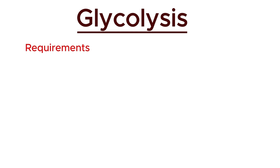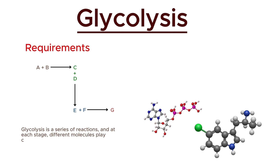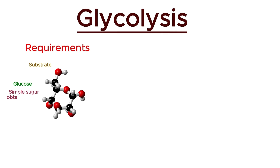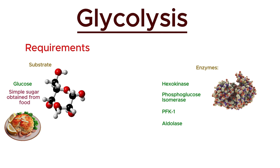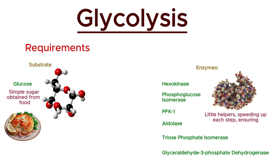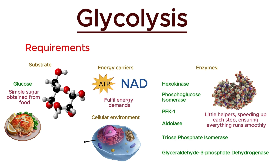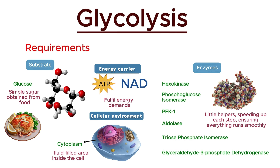Before we dive into the steps of glycolysis, let's talk about what we need to get started. Glycolysis is a series of reactions, and at each stage, different molecules play crucial roles. First, we need a substrate — in this case, it's glucose, the simple sugar we get from our food. Next, we require various enzymes, which act like little helpers that speed up each step of the process, ensuring everything runs smoothly. We also need energy carriers — molecules like ATP and NAD — which are essential for providing the energy needed to drive the reactions forward. All of this takes place within the cell, specifically in the cytoplasm, the fluid-filled area inside the cell.